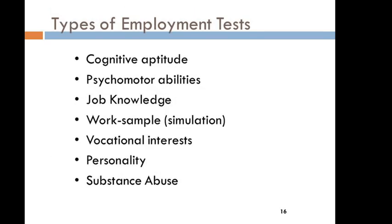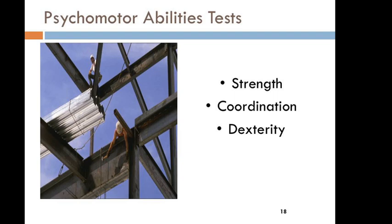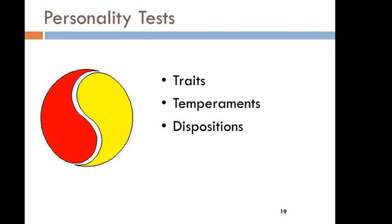Types of Employment Tests include: Basic Cognitive Aptitude Test, Psycho-Motor Abilities, Job Knowledge Test, Work Sample Test, Vocational Interest, Personality, and Substance Abuse. The Cognitive Aptitude Test measures individuals' ability to learn as well as to perform a job. The Psycho-Motor Ability Test tests the candidate's strength and coordination. The Personality Test asks about grades, temperaments, and disposition of a candidate.